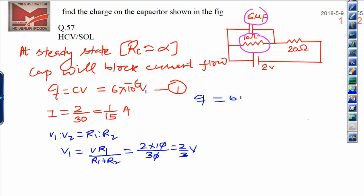Then C is 6×10⁻⁶ into voltage, and voltage is 2/3. So 6×2/3 = 4, and finally, the charge on the capacitor is 4 microcoulomb. This is the answer.